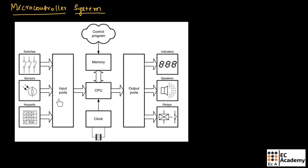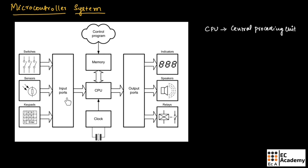This figure shows a microcontroller system. This microcontroller system basically consists of an input port, output port, control program, CPU, and clock signal. Here, CPU is a central processing unit capable of performing simple arithmetic, logic, and timing operations. Input port signals can be derived from sources such as switches, sensors, and keyboards.